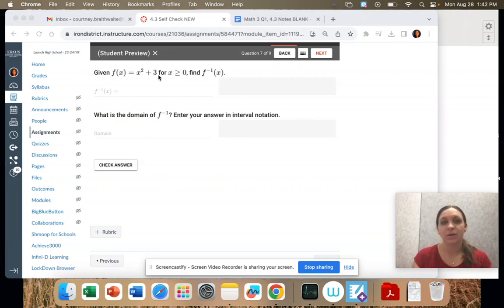So we're given a function, x squared plus 3, and then it's cutting the domain. It's saying where x is greater than or equal to 0, find the inverse. What's the domain of the inverse?